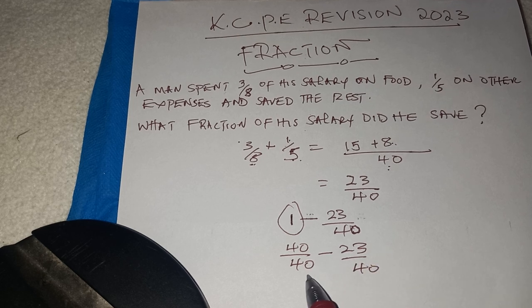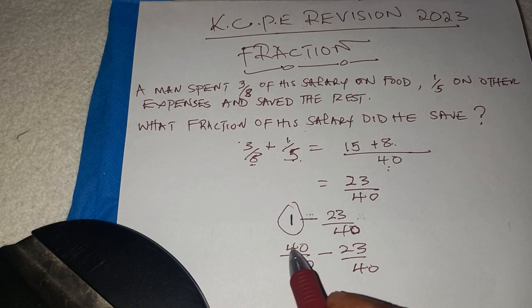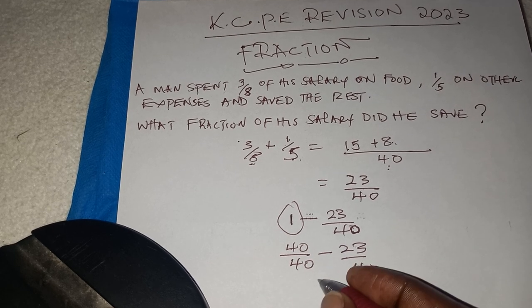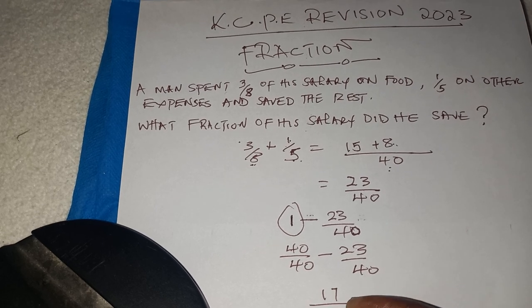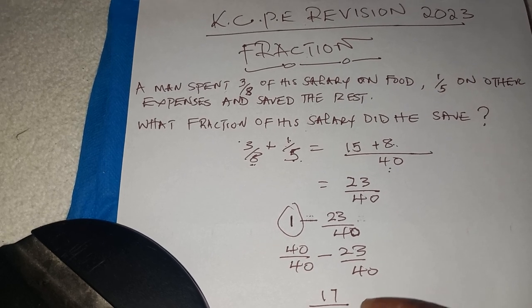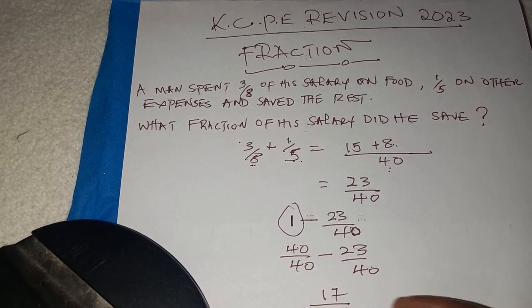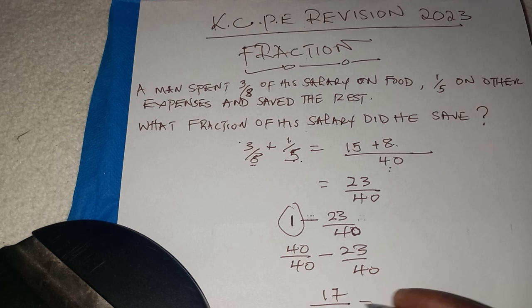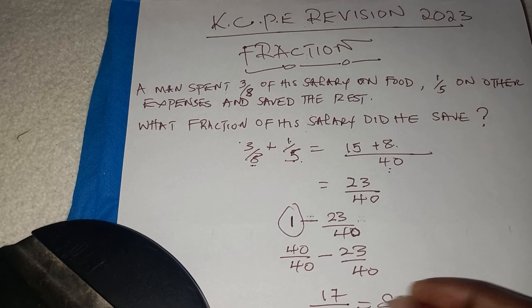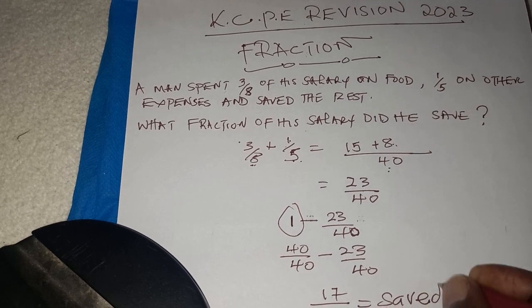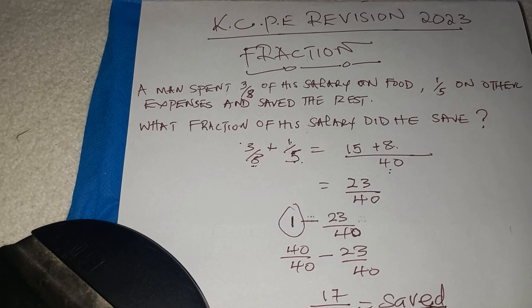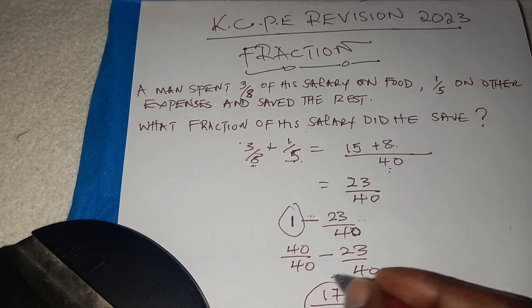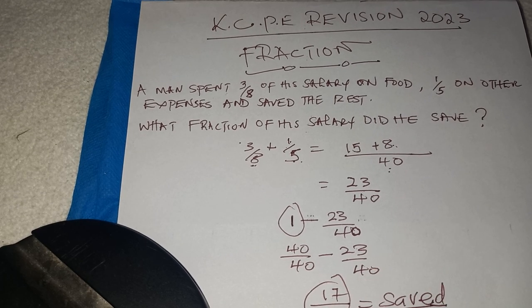When they have the same denominator, you just subtract directly. So it is 40 minus 23, and you get 17 over 40. So 17 over 40 is the fraction of the salary which was saved. Our answer is 17 over 40.